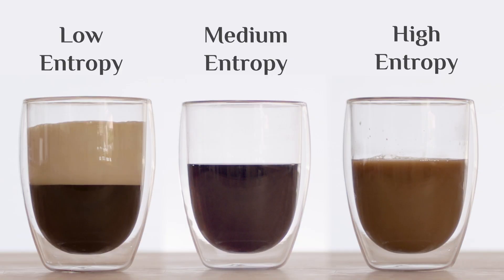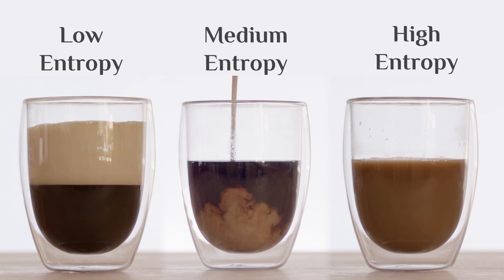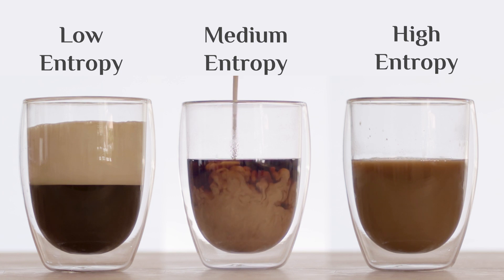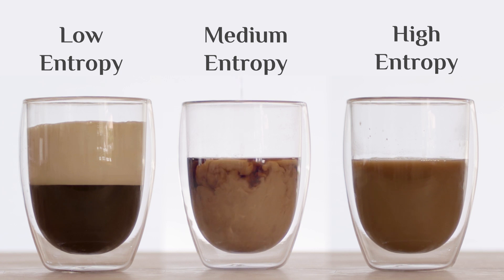From that point of view, it's not at all surprising that entropy goes up as a function of time. It's simply because there are more ways to be high entropy than to be low entropy. If you have a medium entropy system and just let it go, let it do its thing, let it evolve into the universe, it will naturally increase in entropy since there are so many more configurations that look that way.